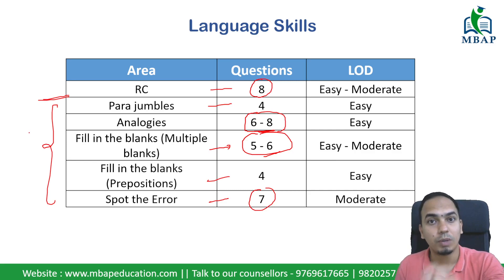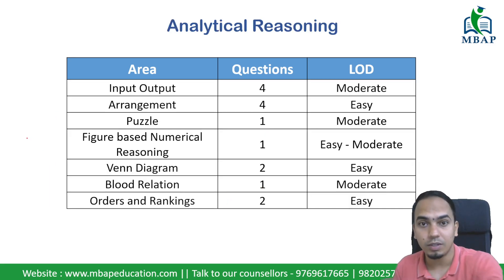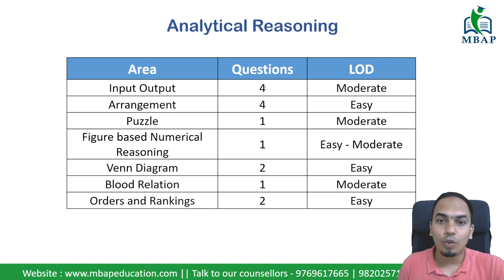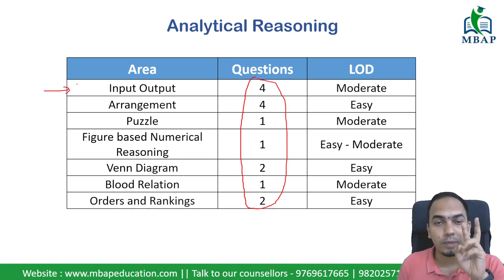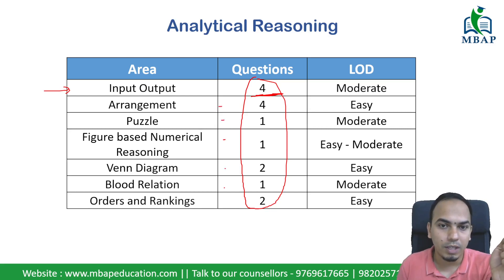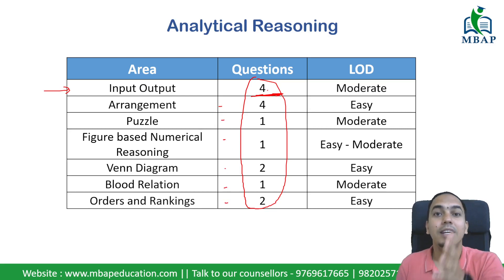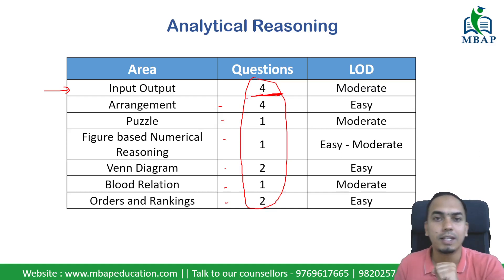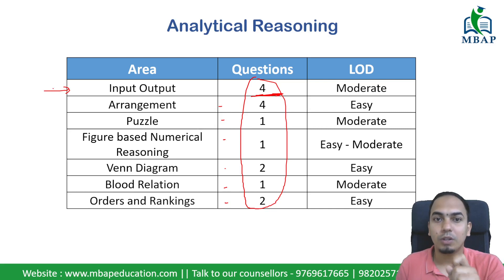The language section cutoff will definitely increase this year. Coming to logical reasoning: overall, the number of questions in pure LR has reduced. Input-output, which used to be two sets, has been reduced, and those 4 questions have been moved into verbal reasoning and critical reasoning. In analytical reasoning, 4 questions have increased. So the good news is input-output has reduced, which should help students increase their cutoffs here as well.